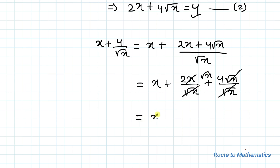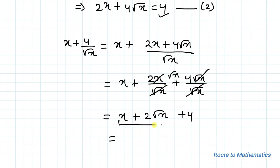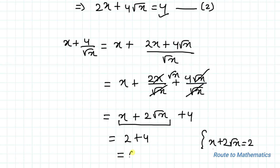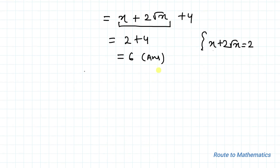The root x terms cancel, so we can write x plus 2 root x plus 4. Here we have x plus 2 root x, and from equation 1 we know x plus 2 root x equals 2. Substituting that value, we have 2 plus 4 equals 6 as our answer. This completes our first method.